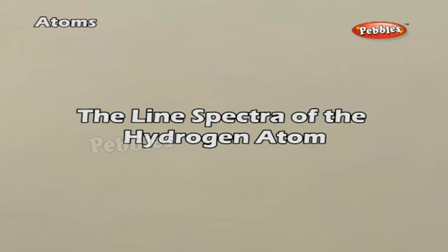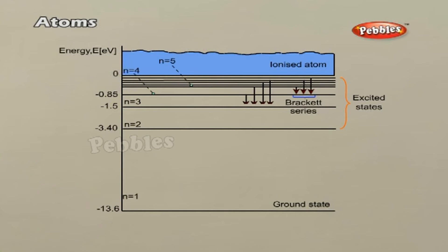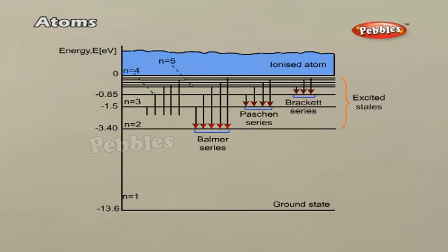The line spectra of the hydrogen atom: When an atom makes a transition from the higher energy state with quantum number Ni to the lower energy state with quantum number Nf, that is Nf less than Ni, the difference of energy is carried away by a photon of frequency νif as follows.